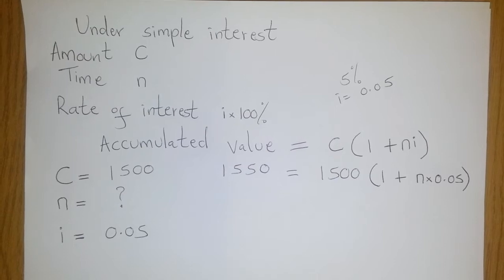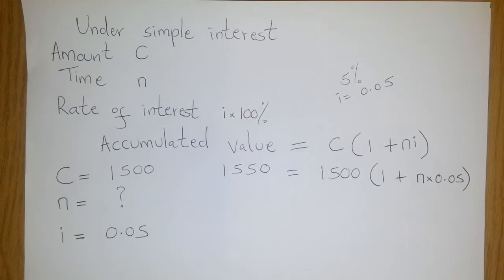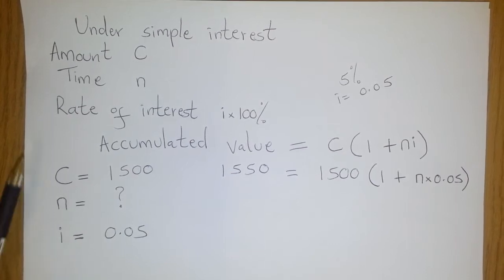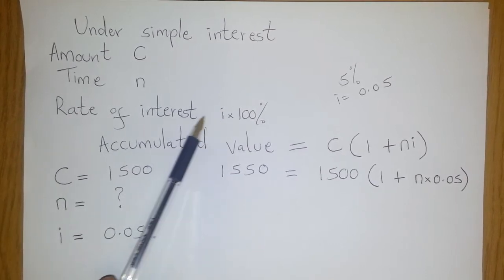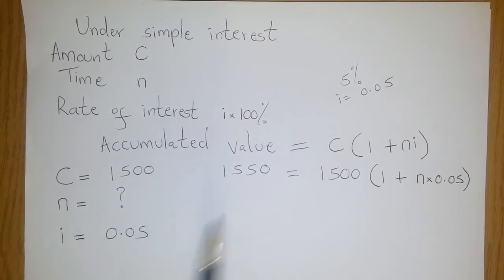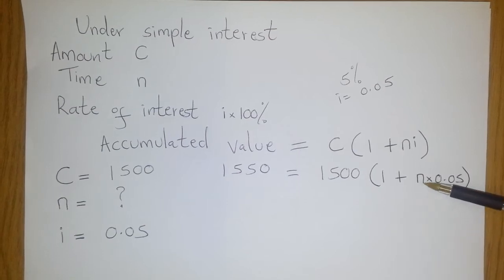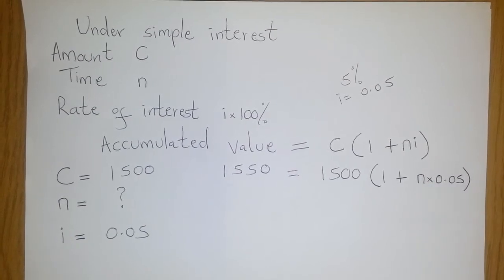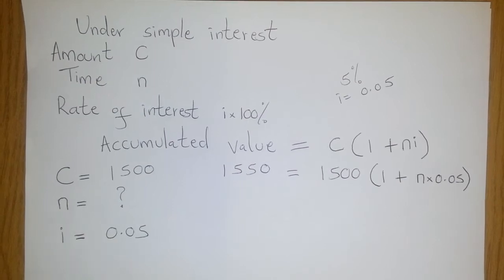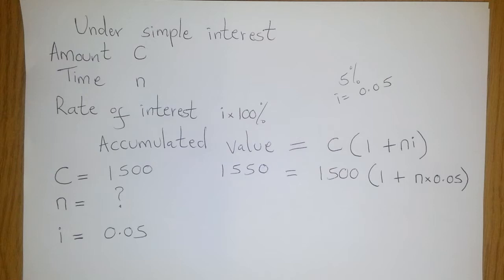Please note that in this example, n will come out as the number of years because this rate, the rate we are working with here, is a rate per annum. It is 5% per annum. So the n we will get here is going to be in years, but we are going to convert it to days.